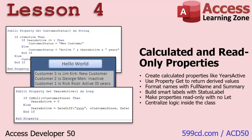In Lesson 4, we're continuing on with our class stuff. We're going to make calculated and read-only properties — basically functions that look at the data in the class and return certain information. For example, I can say get me how many years this customer has been active. It knows the customer since date and can figure that out. That's all covered in Lesson 4.